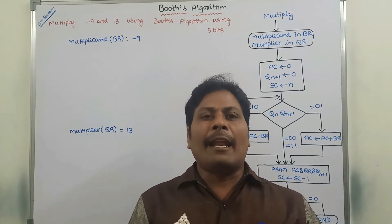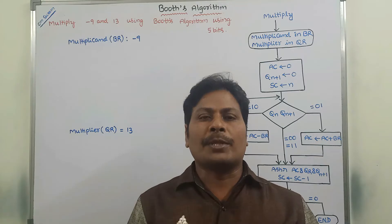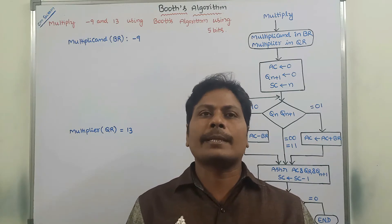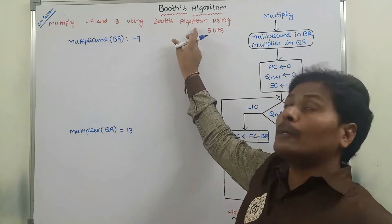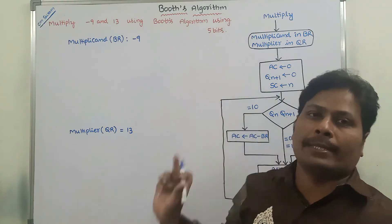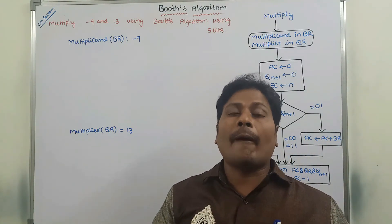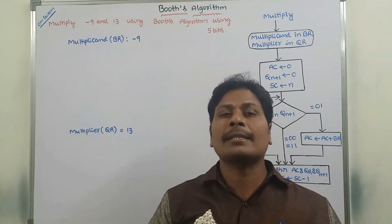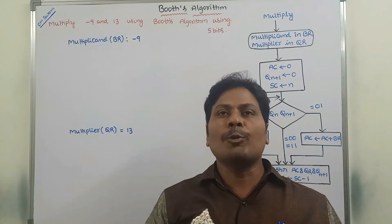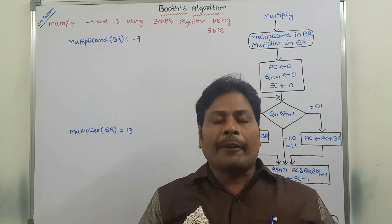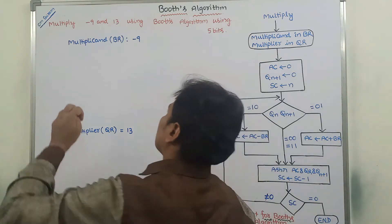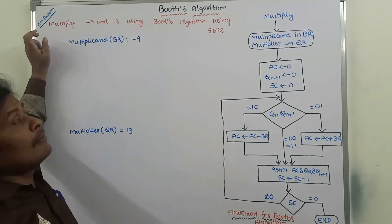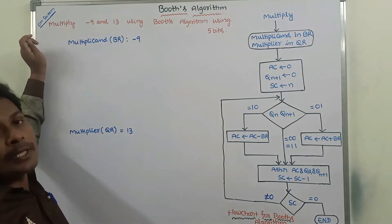Hi friends, welcome back to our YouTube channel. Today we have to discuss about multiplying minus 9 and 13 using Booth's algorithm using 5 bits. In the previous video, we already solved multiply minus 9 into minus 13 using Booth's algorithm. Now, in this video, how to multiply minus 9 and 13 using Booth's algorithm.